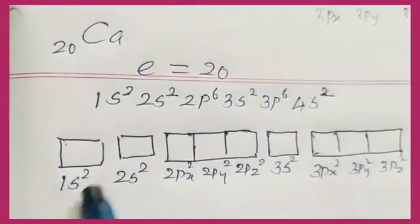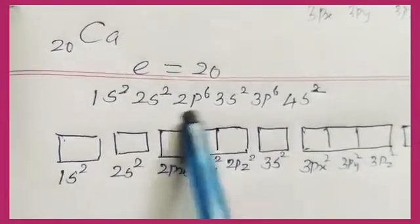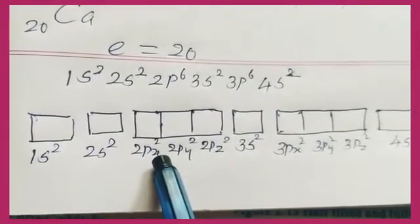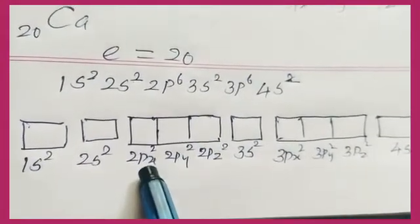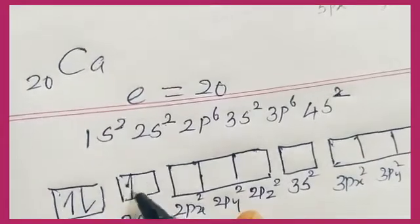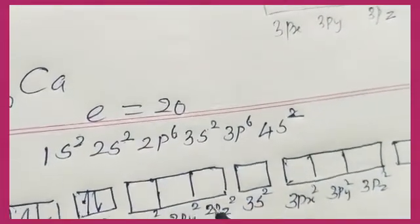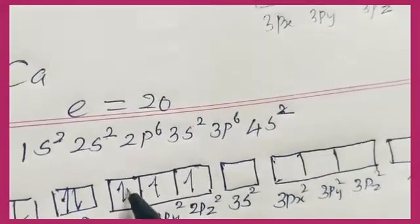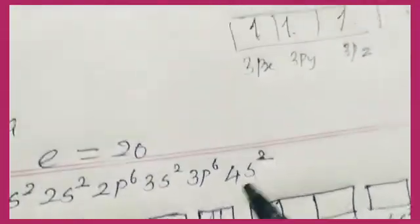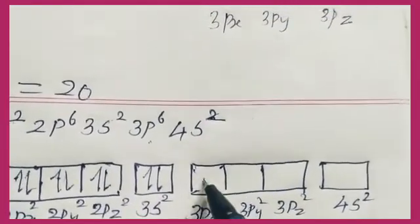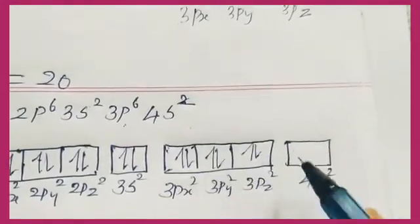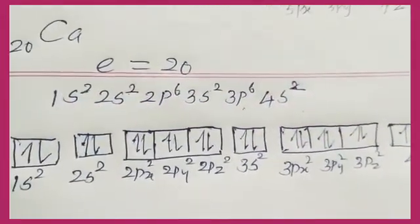For calcium with 20 electrons: 1s²(2), 2s²(4), 2p⁶(10), 3s²(12), 3p⁶(18), 4s²(20). The total is 2+2+6+2+6+2 = 20. The electronic configuration of calcium is 1s²2s²2p⁶3s²3p⁶4s². In the orbital diagram, s orbitals have 1 box each, and p orbitals have 3 boxes (2px, 2py, 2pz). The 4s orbital is filled last with 2 electrons.